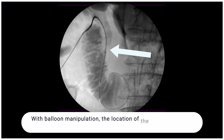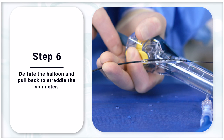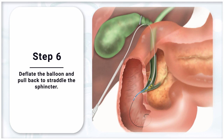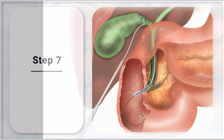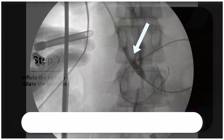Step 6: Deflate the balloon and pull back to straddle the sphincter, ensuring that the sphincter is halfway between the marks on the balloon. Step 7: Inflate the balloon to dilate the sphincter. A waist should be seen to indicate correct placement of the balloon.